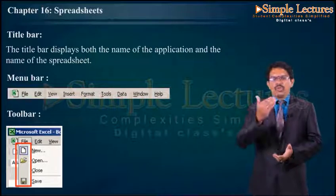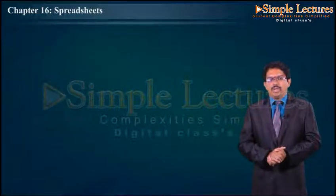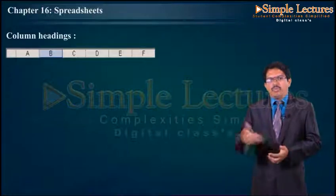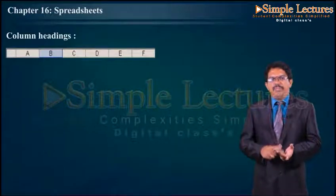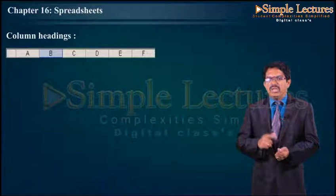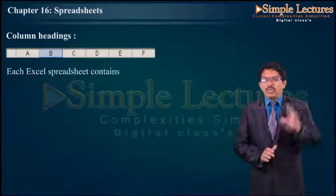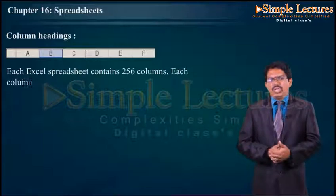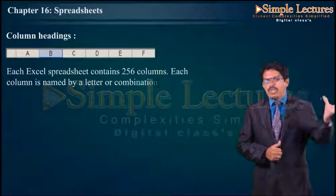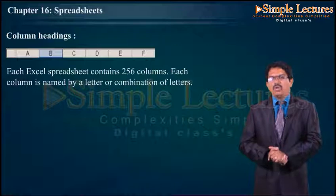Column heading represents columns such as A, B, C, D, E, F. Each Excel spreadsheet contains 256 columns. Each column is named by a letter or combination of letters. Row heading: Each spreadsheet contains 65,536 rows. Each row is named by a number.